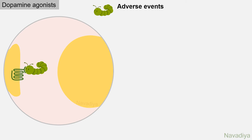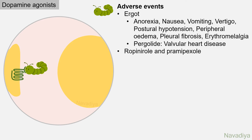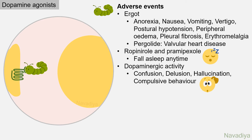Ergot derivatives are associated with anorexia, nausea, vomiting, vertigo, postural hypotension, peripheral edema, pleural fibrosis, and erythromelalgia. Pergolide is associated with valvular heart disease. These adverse events are less frequent with non-ergot drugs. Instead, ropinirole and pramipexole are associated with an uncontrollable tendency to fall asleep at any time. Adverse events due to increased dopaminergic activity include confusion, delusion, hallucination, and compulsive behavior like compulsive shopping, gambling, and sexual activity.